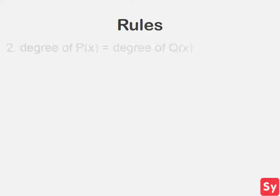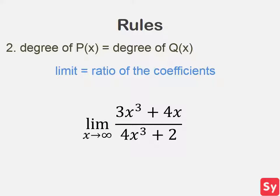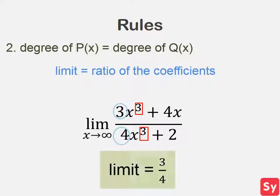Rule two: if the degree of p(x) is equal to the degree of q(x), then the limit is equal to the ratio of the coefficients. Let's see what this means with an example. The limit as x approaches infinity of 3x cubed plus 4x over 4x cubed plus two. We'll first look at the largest exponent of the numerator and denominator — they both happen to be three. So the limit is going to be equal to the ratio of their coefficients, which is three-fourths, and that equals their limit.